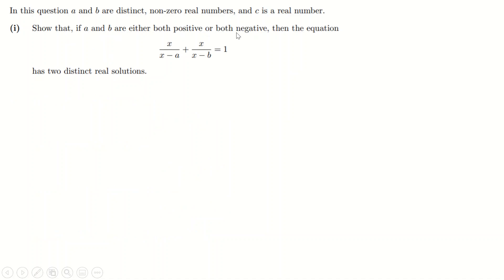Let's start from the top with part one. Show that if a and b are either positive or negative, then the equation has two solutions. It would make sense to just start with this and simplify it. If I multiply this fraction by (x - b)/(x - b), of course I'm just multiplying by one. And if I multiply this fraction by (x - a)/(x - a), I get the same denominator, which means I can put the fractions together.